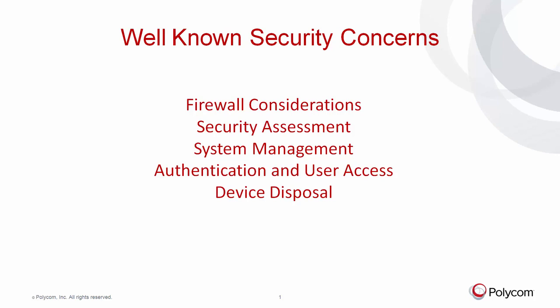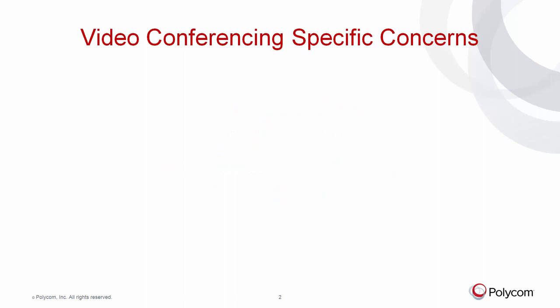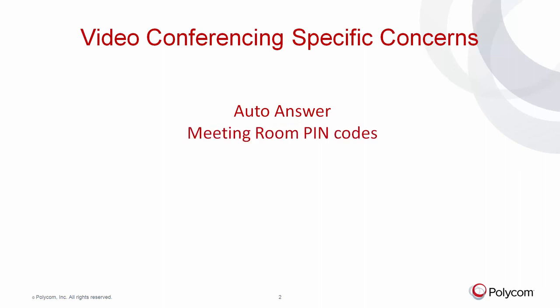Along with these well-known security topics, there are several steps that need to be taken that are more video-centric. These include tasks such as disabling auto-answer settings, setting PIN codes for meeting rooms and conferences, reviewing logs and call detail records for unwanted activity, and enabling encryption to secure calls against eavesdropping.